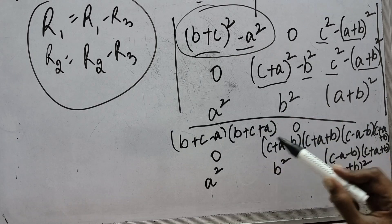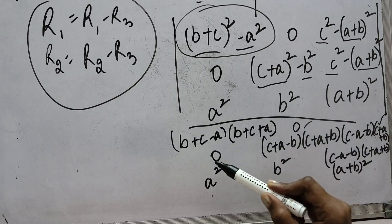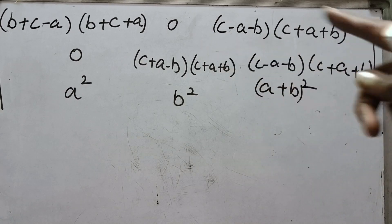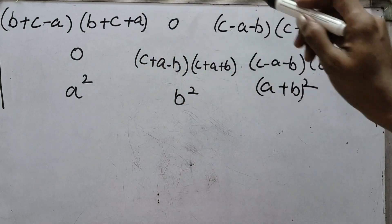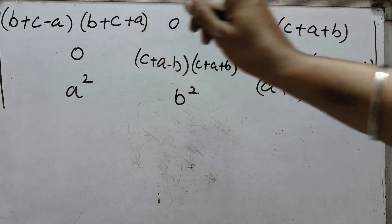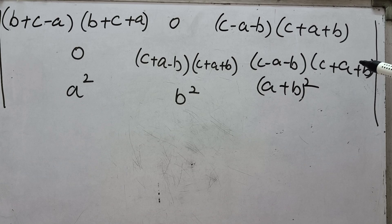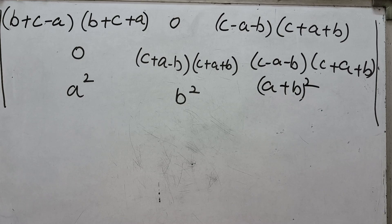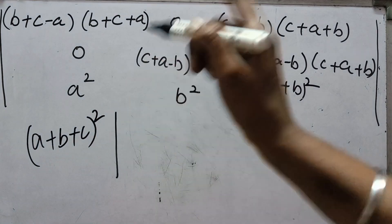Now we can see some things are common. In row 1: (b+c+a) appears, and (c+a+b) appears — so (a+b+c) is common in the first and third elements. In row 2: (a+b+c) appears in both the second and third elements. In the third row there is nothing common. So we can take (a+b+c)² common — once from row 1 and once from row 2.